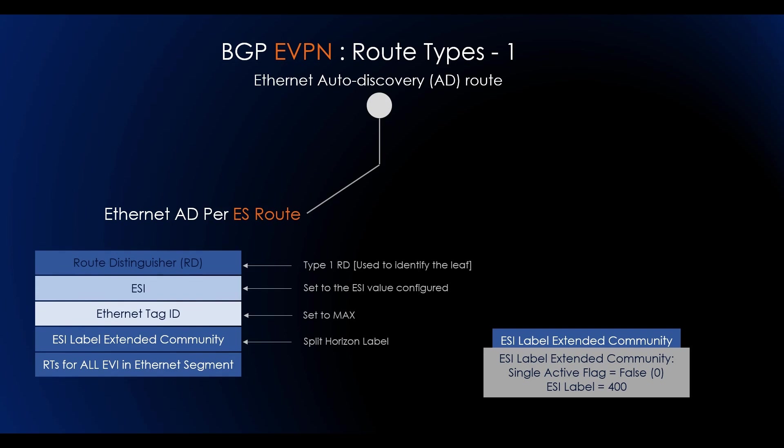With this AD per ES route, we have route distinguisher which identifies the leaf, the ESI which is configured, the Ethernet tag ID is set to max, and ESI label extended community will carry the labels and the route targets.